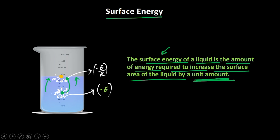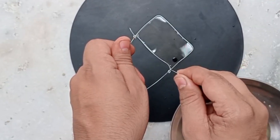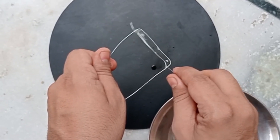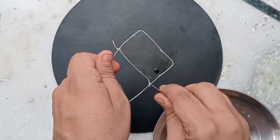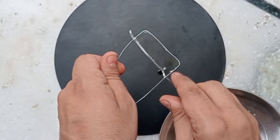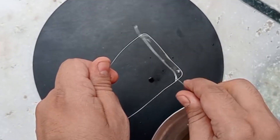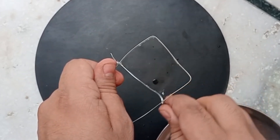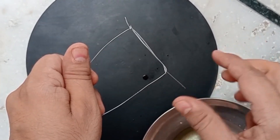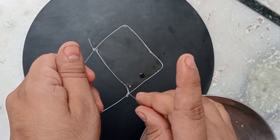Now let's try to find the expression for surface energy, but before that let me show you an interesting DIY. You can see in this activity that this is a soap film that I have created, and I have to do some work to stretch the area because its normal tendency is to contract back. It wants to attain as minimum surface area as possible, but the moment I increase the surface area, I have to do some work, and that work would be stored as surface energy.